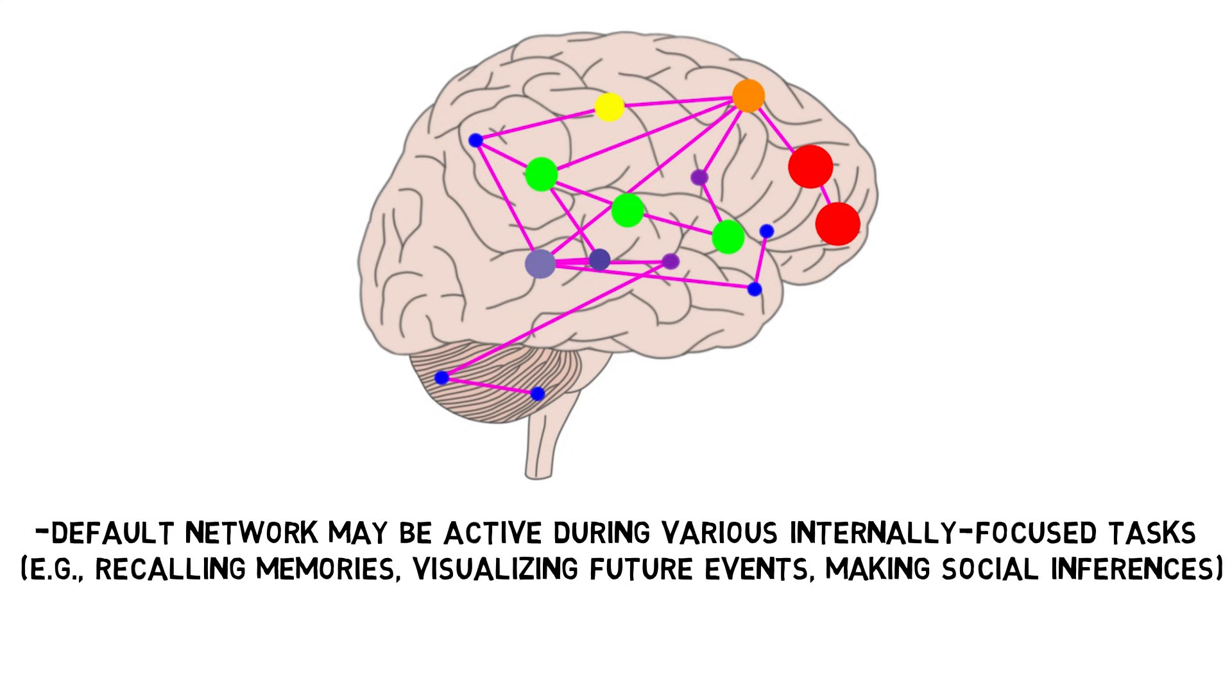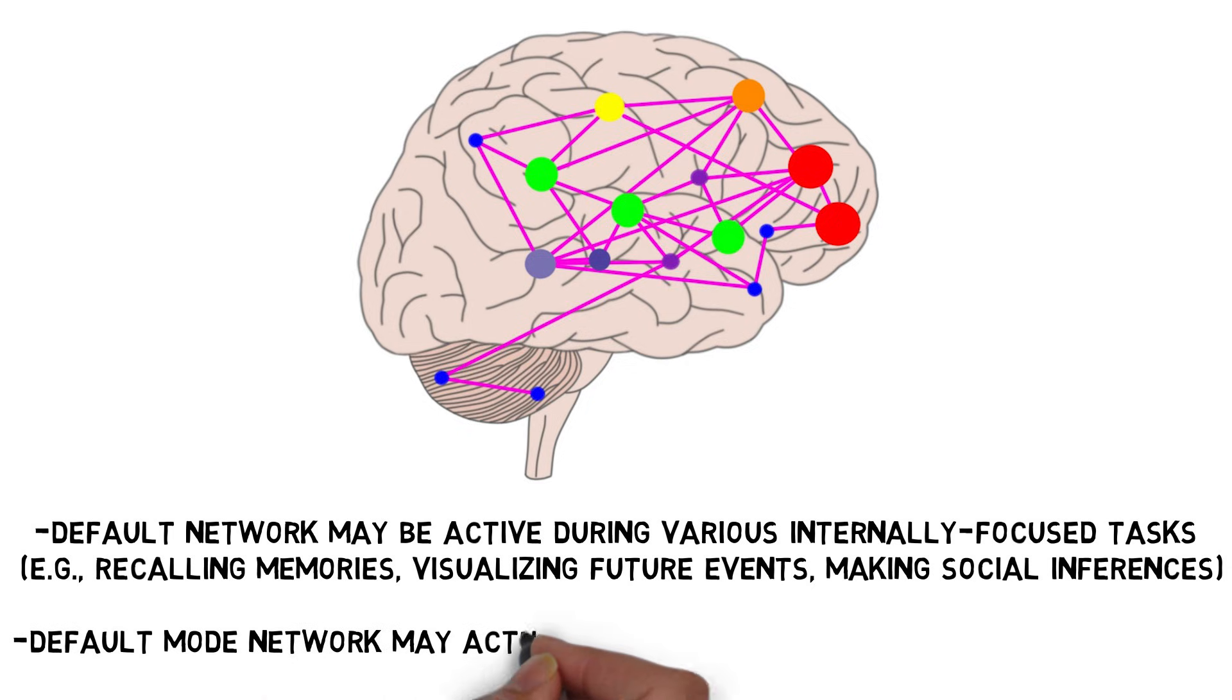The default network is a relatively recent concept, however, and as such our understanding of it is still evolving. For instance, data from recent studies suggest that the network may actually consist of multiple distinct networks, which might even have different functional specializations.